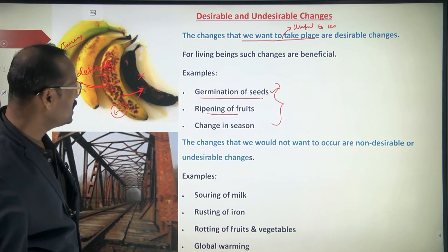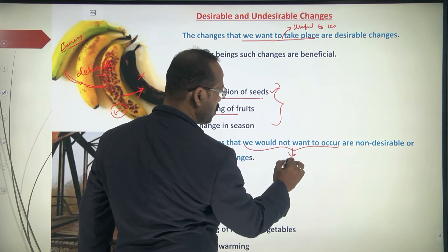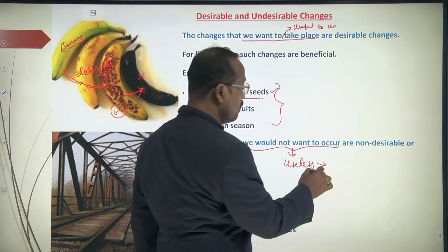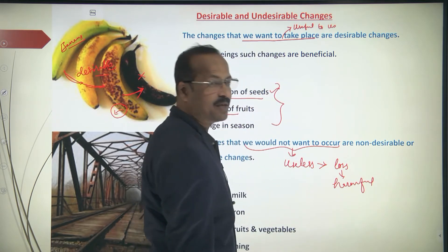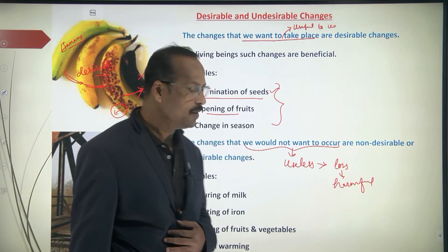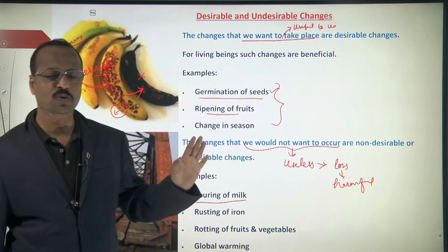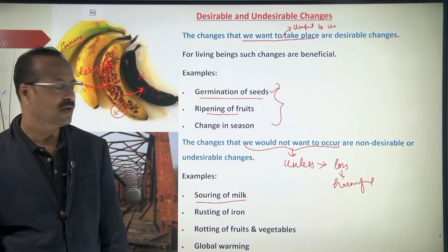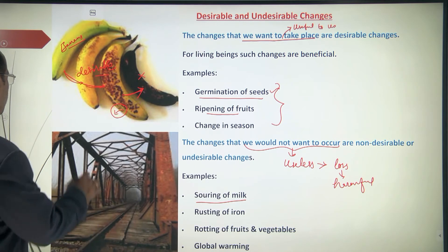Undesirable changes are changes we would not want to occur. They are useless or even harmful to us, yet they still happen. Examples include souring of milk — we do not want it, but if we do not boil or refrigerate the milk it becomes sour and we throw it away unnecessarily.